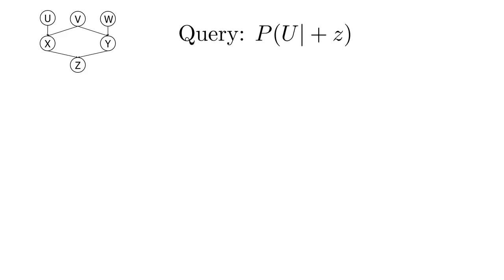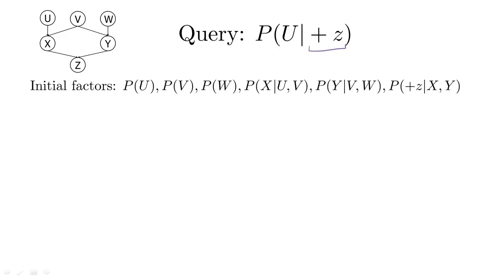Our initial factors are all the conditional probability tables. For each of the tables that has the variable Z in it, we restrict ourselves to those rows consistent with plus Z. So now we have the following set of initial factors: the marginal for U, the marginal for V, the marginal for W, the conditional of X given U and V, the conditional of Y given V and W, and the conditional of Z given X and Y, but only the entries consistent with plus Z.